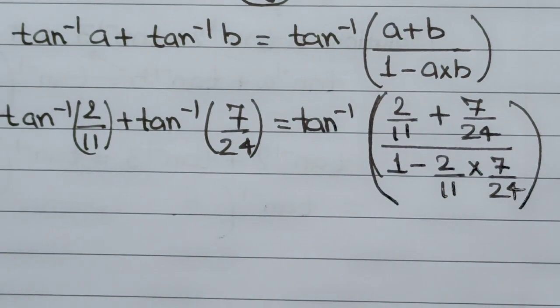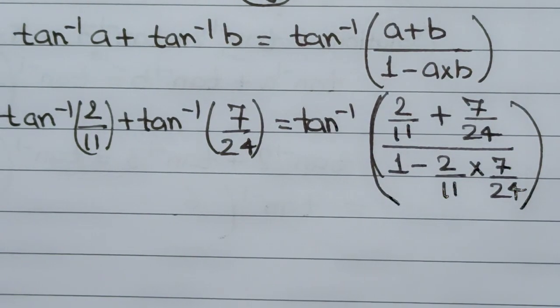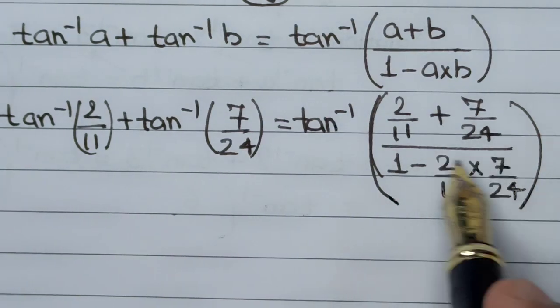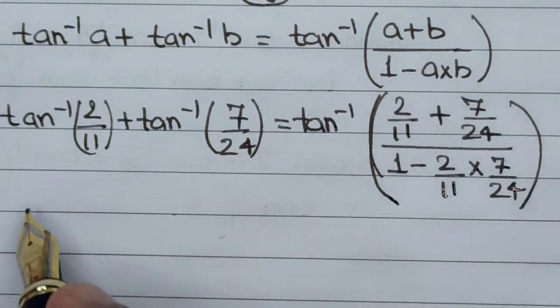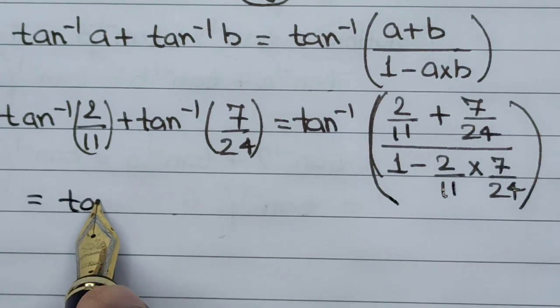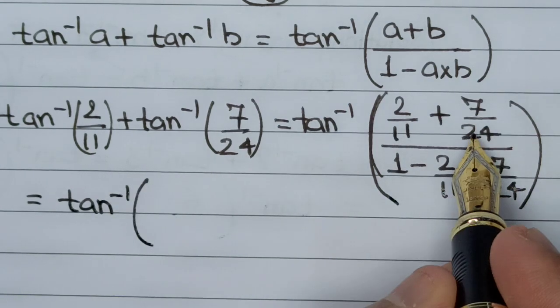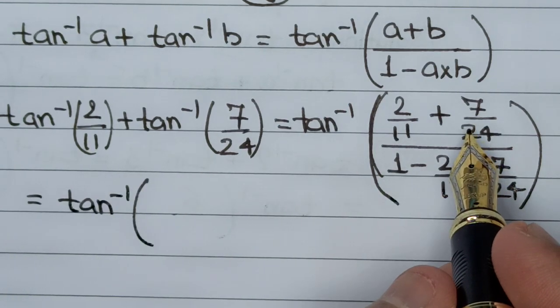Now all we have to do is reduce this particular ratio. This becomes tan⁻¹... checking LCM on this side and cross-multiplying...